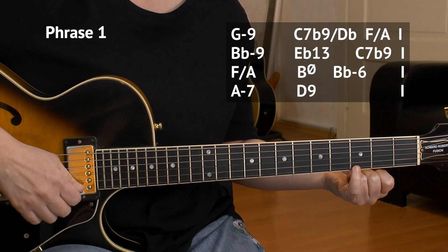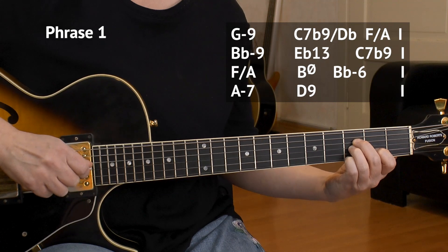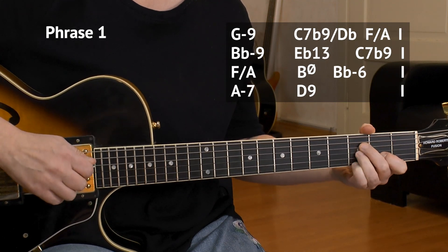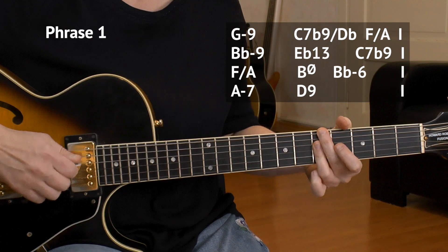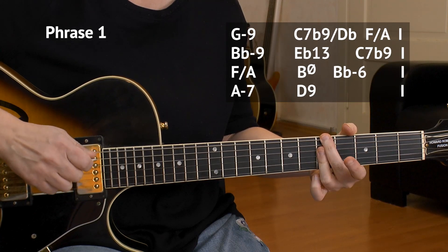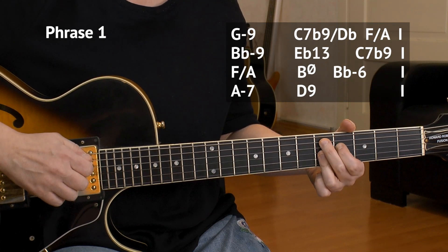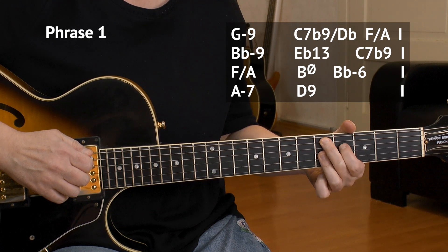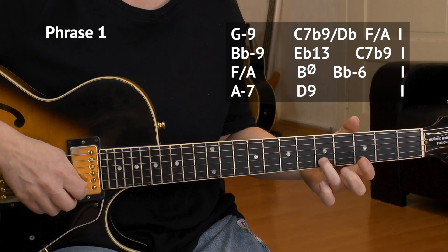And this leads us to a B half diminished. Then a B flat minor six, which is here. We have a B flat minor here. That's a triad. And here's the sixth of the chord, that's the third of the E string. B flat minor six.